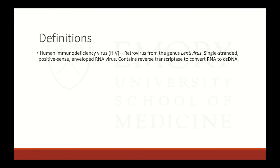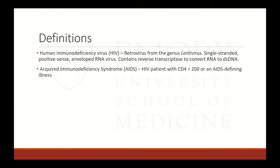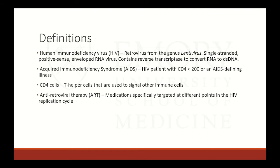Let me establish some definitions. Human immunodeficiency virus is a retrovirus from the genus Lentivirus — a single-stranded, positive-sense, enveloped RNA virus — containing reverse transcriptase and protease. Reverse transcriptase converts its RNA into double-stranded DNA. Acquired immunodeficiency syndrome, or AIDS, is defined as an HIV patient with a CD4 count less than 200 or an AIDS-defining illness. CD4 cells are T helper cells that signal other immune cells, versus CD8 cells which do more of the actual cellular killing.